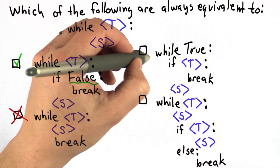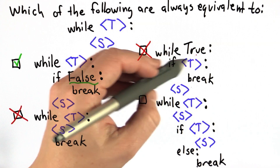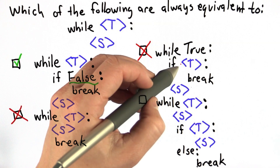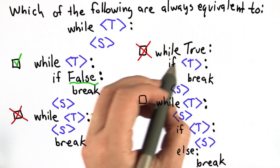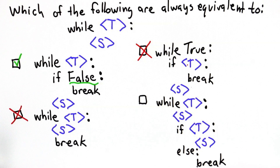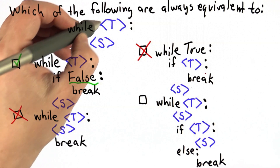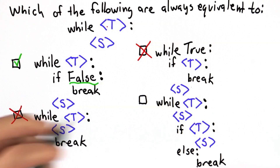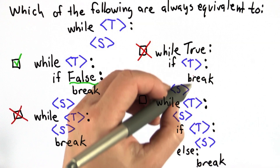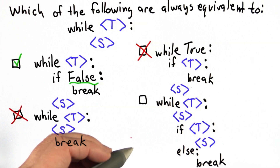The third one is not equivalent. Here we have a 'while true' that will run forever, except we have the break, so that would stop it. The problem is the test condition for the break is the same as the test condition for the while, but it should really be the opposite. In the while, we keep going as long as the test condition is true, but the way the code is written here, if the test condition is true, we stop.